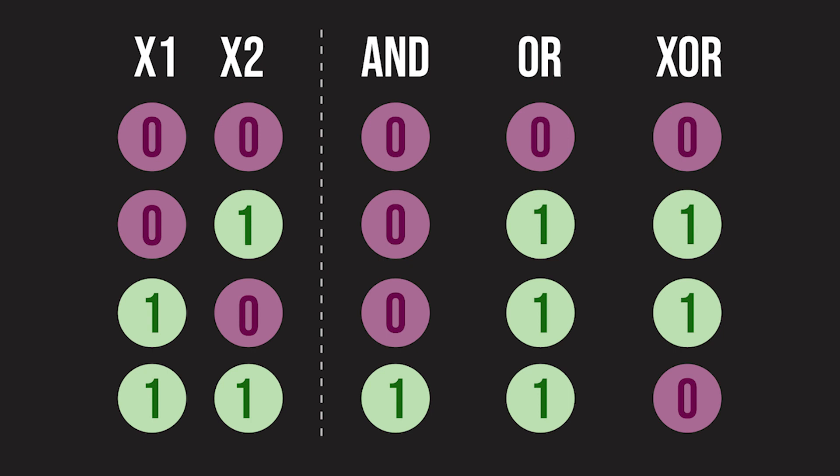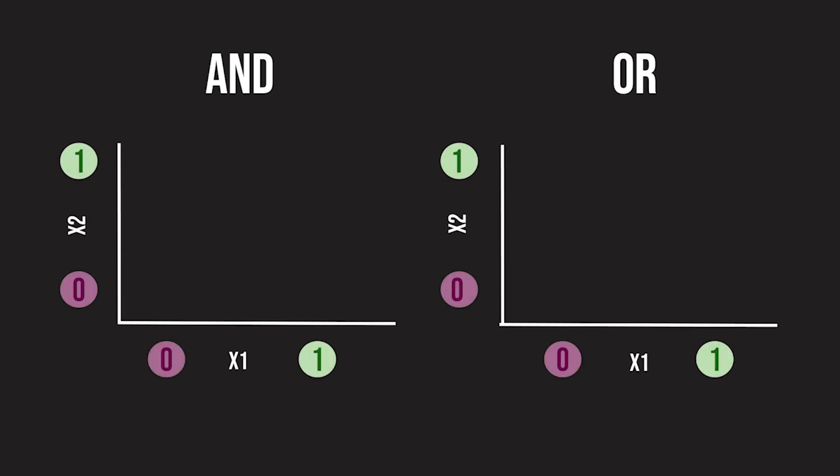Let's try to represent these functions using a linear boundary that separates the 0s and the 1s. It's quite easy to do this for AND and OR, as you can see here. However, things get complicated when trying to model XOR with a linear or logistic function, which cannot fit this non-linear boundary.